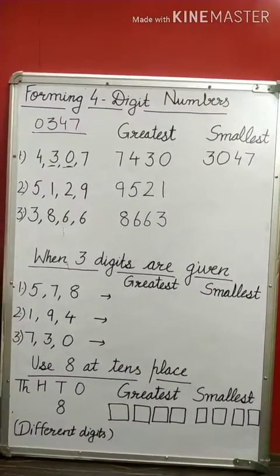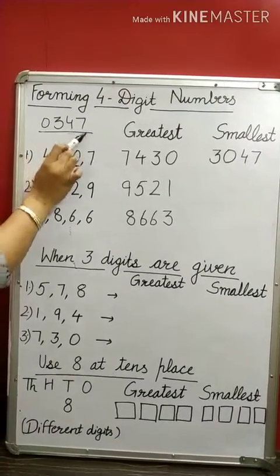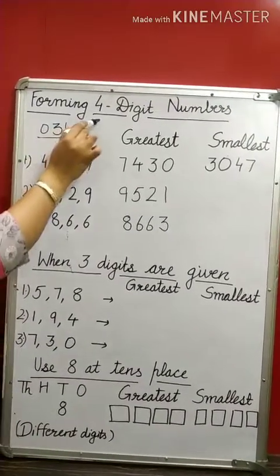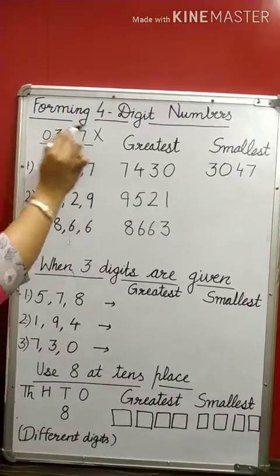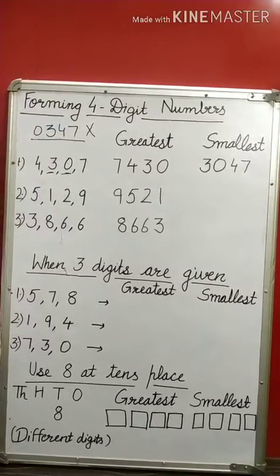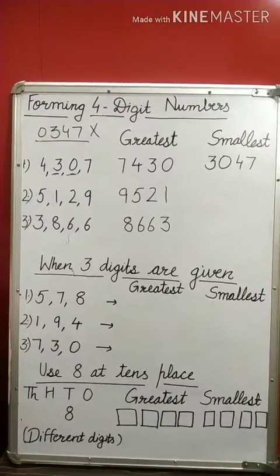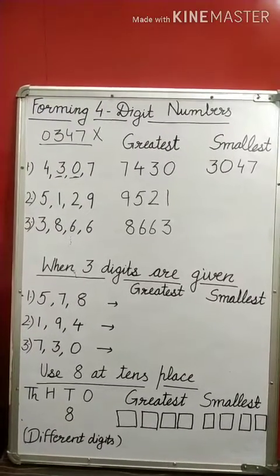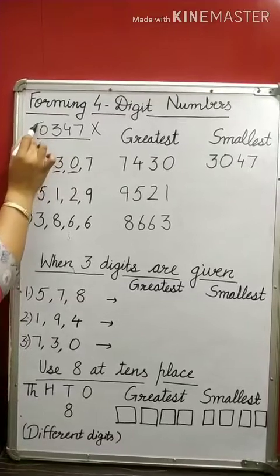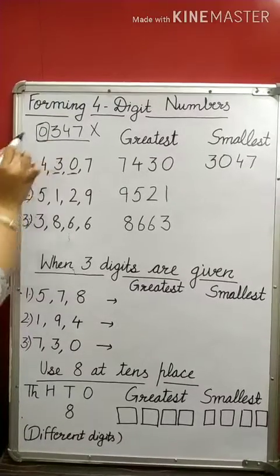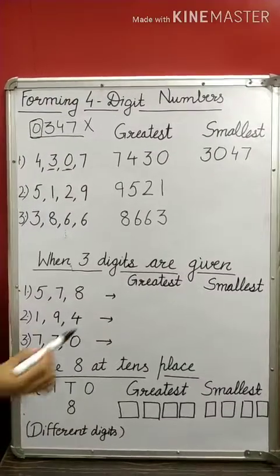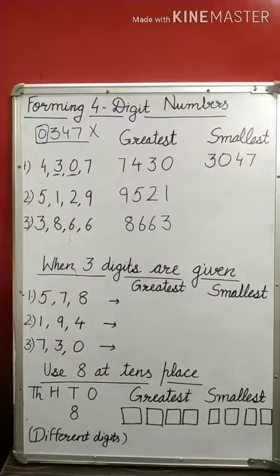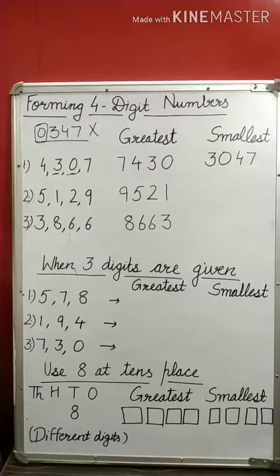If I had written 0, 3, 4, 7 — it is not a 4-digit number; it is considered a 3-digit number. So while writing a 4-digit number, we cannot start any number with 0. I have written 0 at the second place instead. Is that clear?